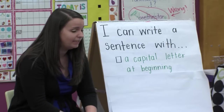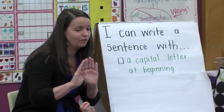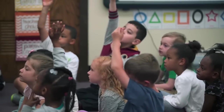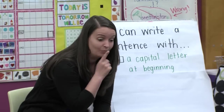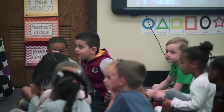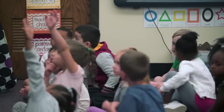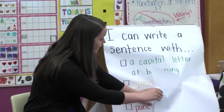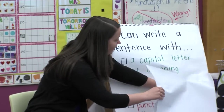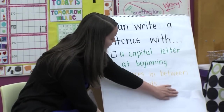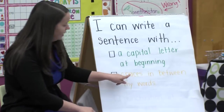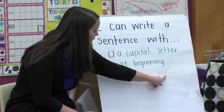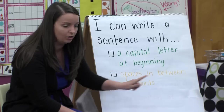There's something that we need in the middle of our sentence, in between our words. Turn and tell a partner first. So in the middle of our sentence we need — let's read it together — spaces in between my words.